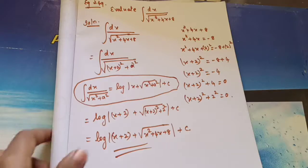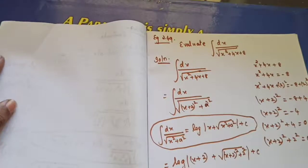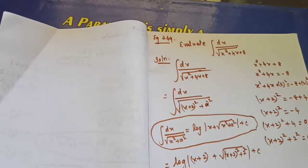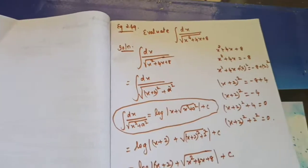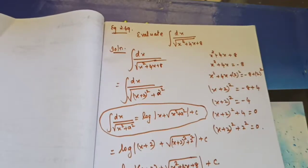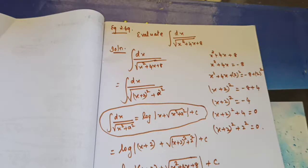Today we have learned starting from Example 2.44 through 2.44, 2.45, 2.46, 2.47. Each and every thing is the same — the denominator or numerator is in the form of a quadratic equation, and we solve using this method. The 7 formulas are very very important. Please learn all 7 formulas thoroughly before starting this section.